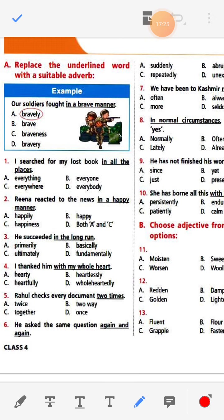Number three: He succeeded in the long run. Options: primarily, basically, ultimately, fundamentally. The answer is 'ultimately'. Number four: I thanked him with my whole heart. Options: hearty, heartlessly, heartfully, wholeheartedly. The answer is 'wholeheartedly'. Number five: Rahul checks every document two times — the answer is 'twice'.